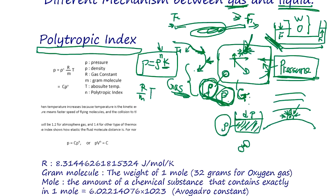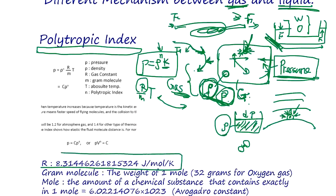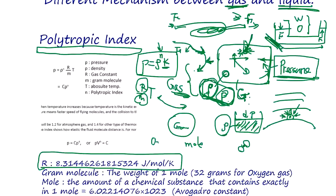When temperature goes up, molecules fly faster and pressure increases. R is the gas constant. M is the molar mass — how many grams per mole of the gas molecules inside the container. For example, O₂ and N₂ have different molar masses; heavier molecules affect pressure differently.